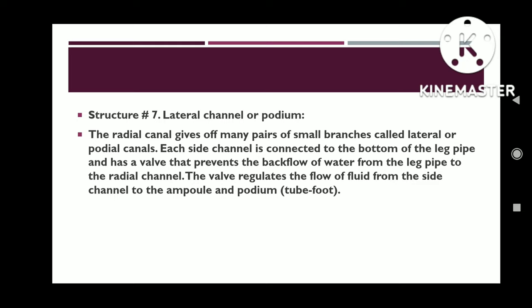Structure seven: lateral canal or podium. The radial canal gives off many pairs of small branches called lateral canals. Each lateral canal is connected to the tube foot and has a valve that prevents the back flow of water from the tube foot to the radial canal.